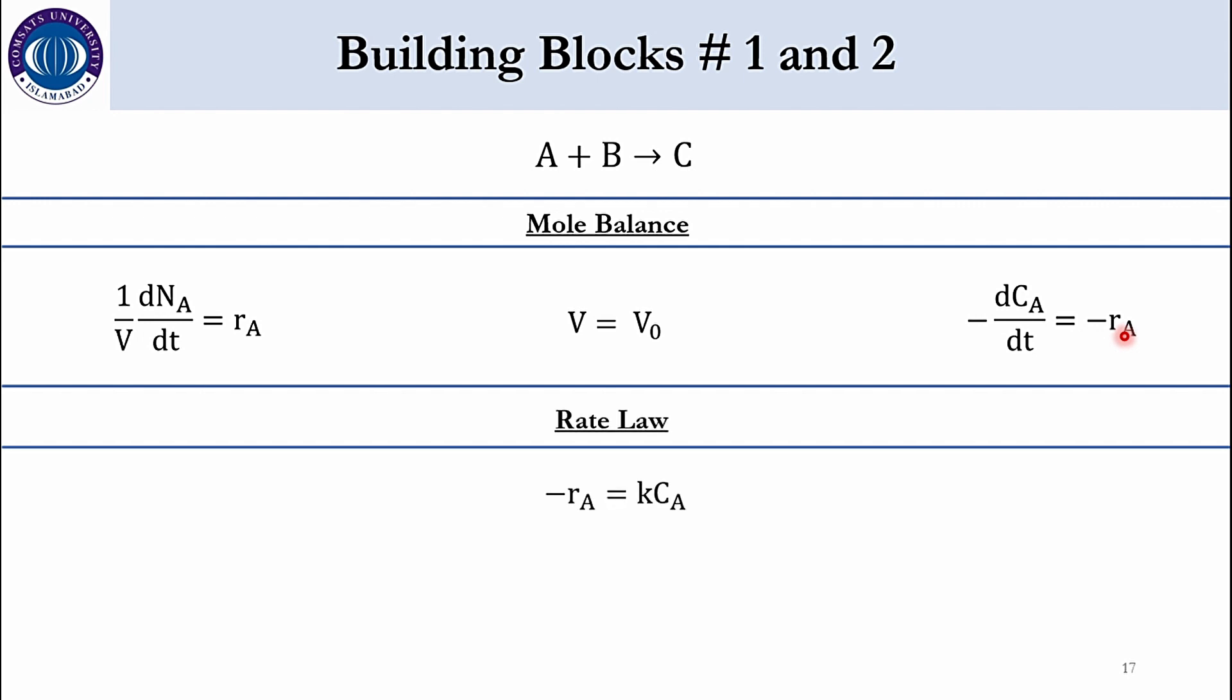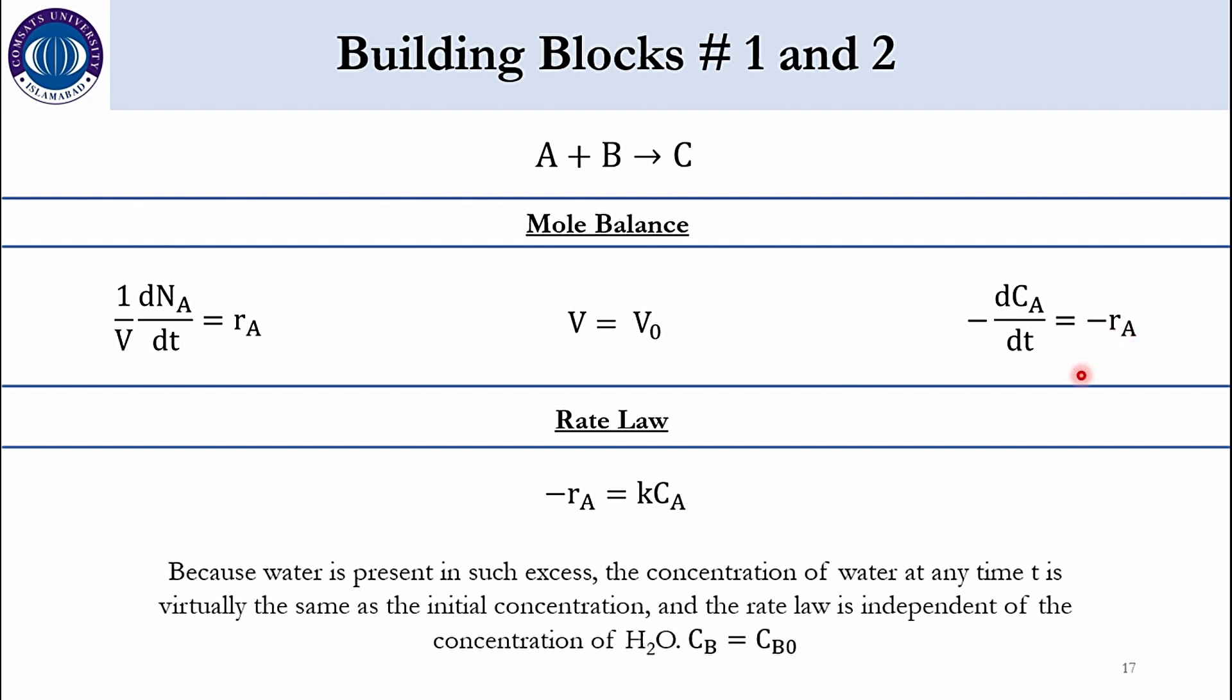Going to the rate law minus RA is equal to kCA as it has been given it's first order with respect to the specie A. While since the specie B is in excess that's why we are not considering it in the rate law expression. And it has been explained here because water is present in such excess the concentration of water at any time T is virtually the same as the initial concentration. And the rate law is independent of the concentration of water. For CB is equal to CB0.